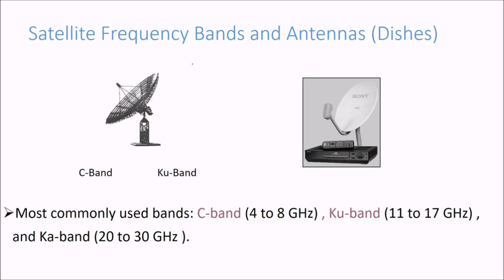This is the satellite frequency bands and antennas we were talking about. C band, Ku band. Most commonly used bands are C band, 4 to 8 gigahertz, Ku band, 11 to 17 gigahertz, and Ka band. These are the commonly used bands.